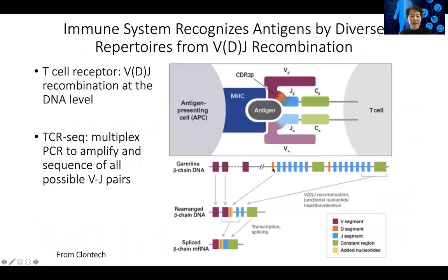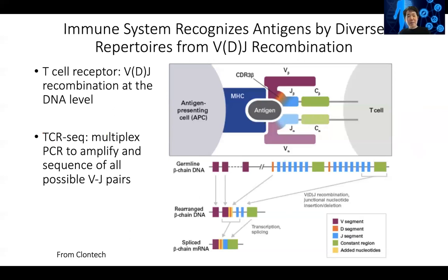How is that done? Every individual has only two copies of the chromosome. But in order to really recognize self from non-self, the TCR has to be able to recognize millions of different things — especially viral and bacterial infections, fungus, and these types of pathogens. How is that done?